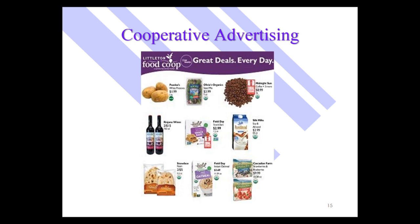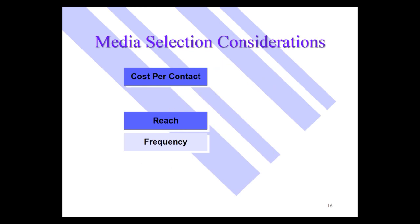I mentioned cost per contact when talking about television — that's one of the major media metrics. A couple of other media metrics are reach, which is the percent of the target market that you reach (100 would be the maximum), and frequency, which is the average number of times you reach them. You want to have a frequency of more than three, because if you're only seen once or twice, that won't sink in — you want repetition.